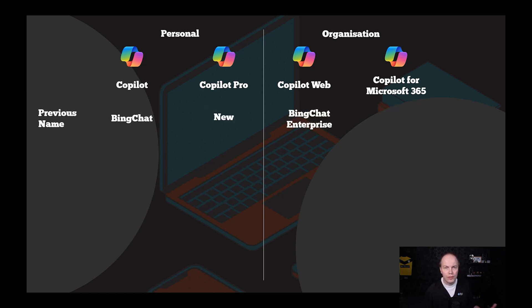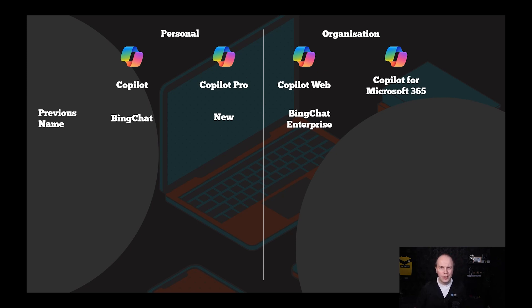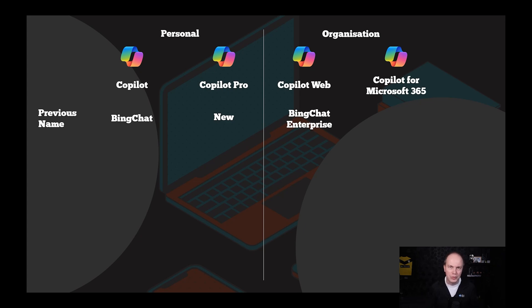Just to recap the naming history: Copilot was previously named Bing Chat. Copilot Web was previously called Bing Chat Enterprise, where you could log in with your work account. We've now got Copilot Pro, which is a new product. Copilot for Microsoft 365 technically had another name — Microsoft 365 Copilot — but there's not really much difference between those.